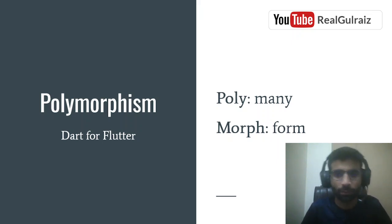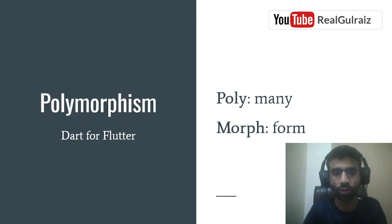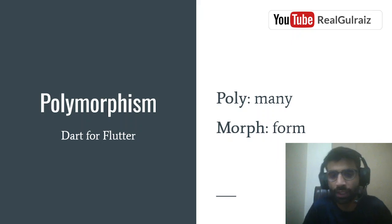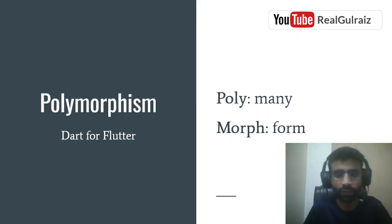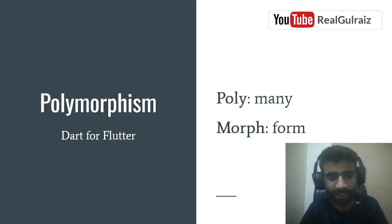In Dart programming language, and in any other programming language, when we talk about polymorphism, first let's see the basic concepts which are common across all languages. If we see the name, 'poly' means many and 'morph' refers to the form. So polymorphism in general means multiple forms or many forms.